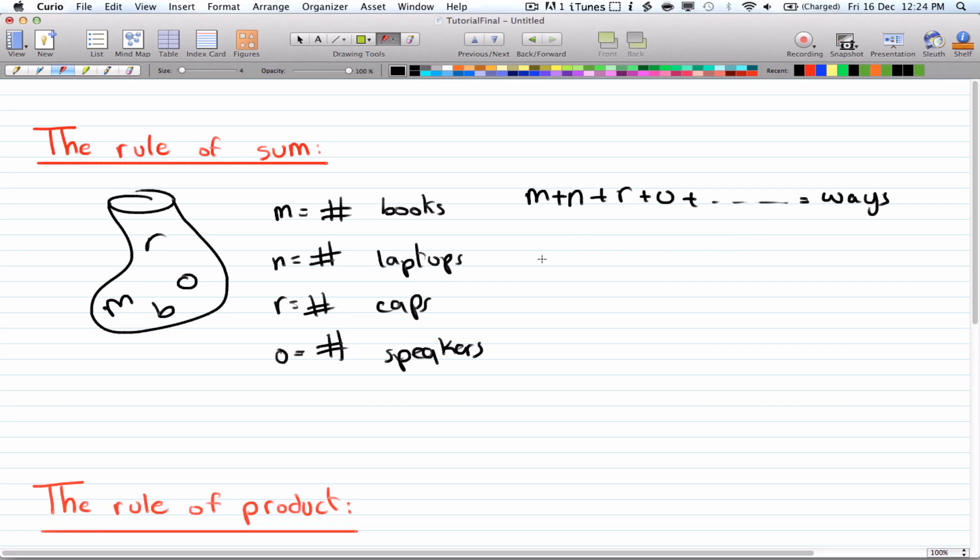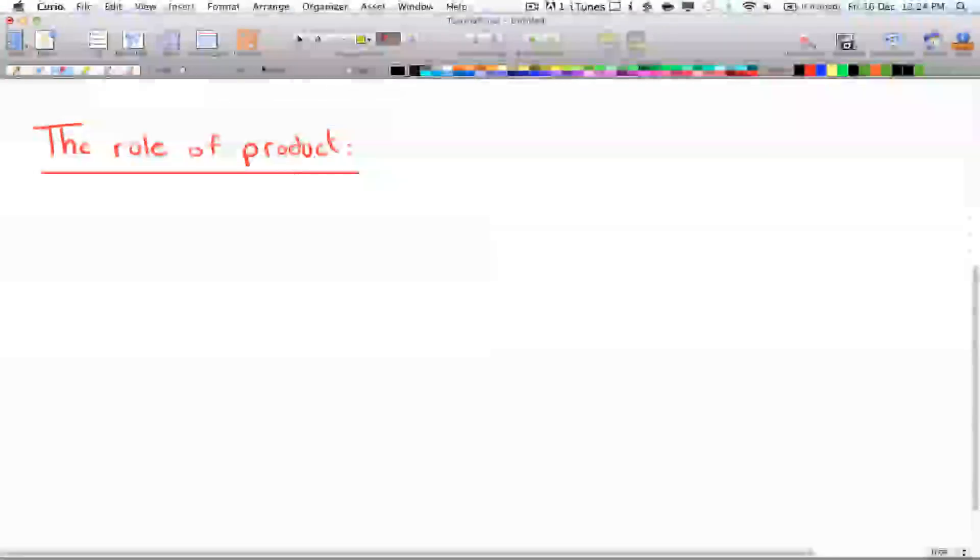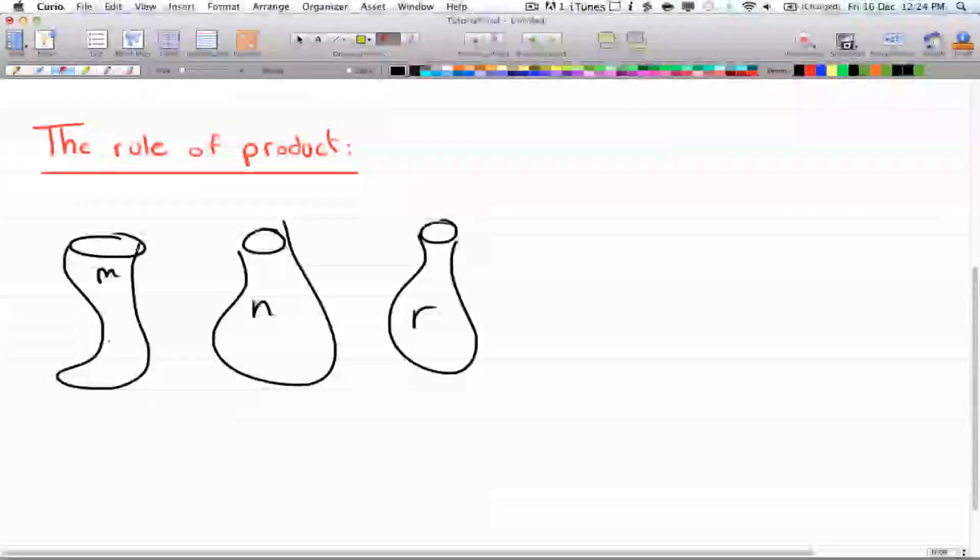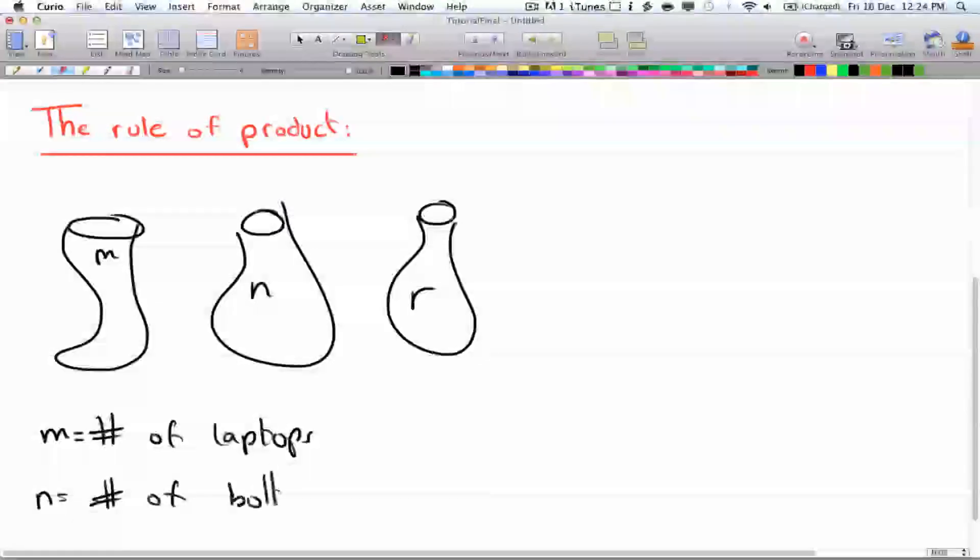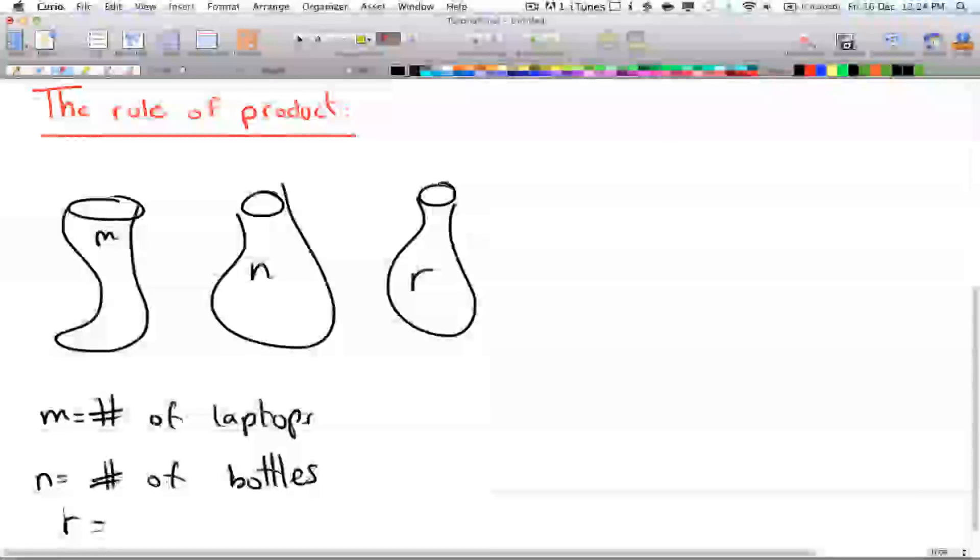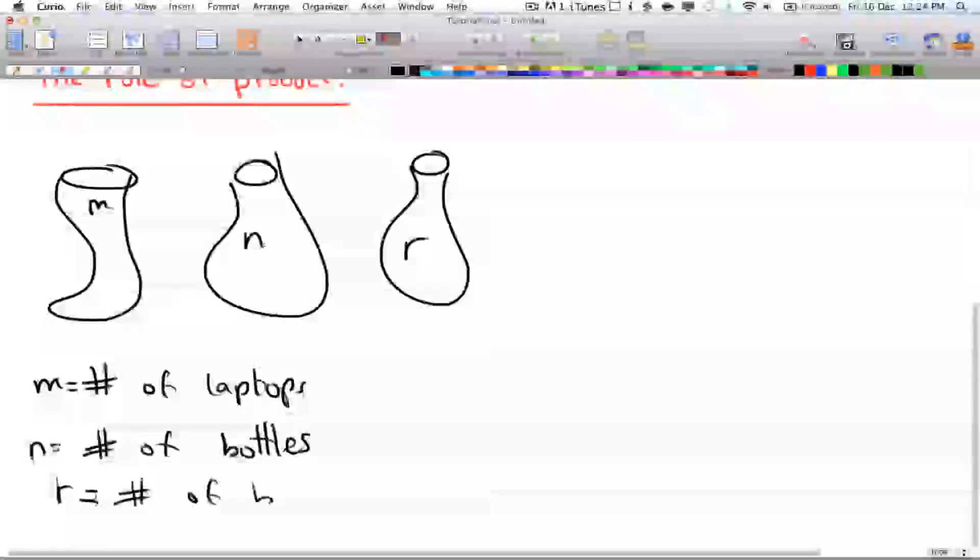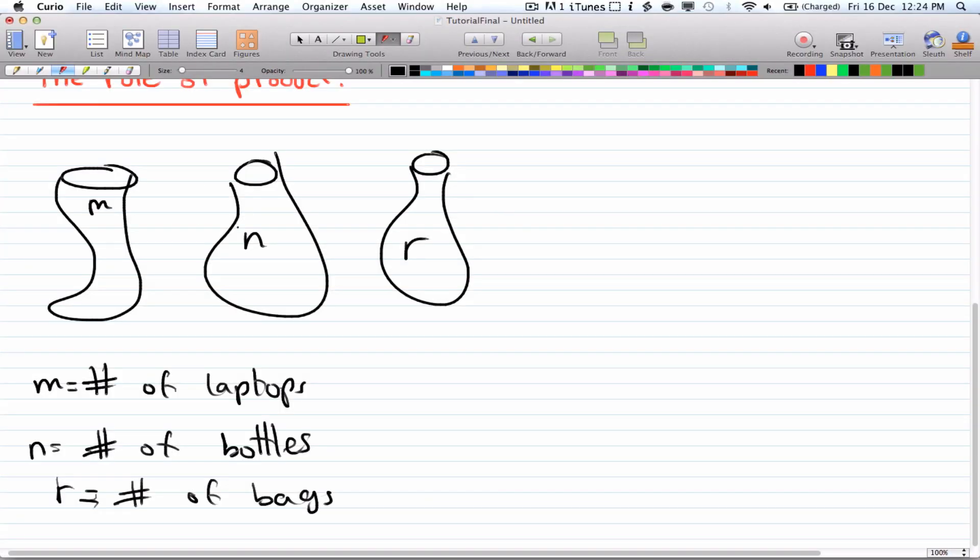Now the rule of product is a bit different. In this case each one is in a bag, so if you have a bag of m, a bag of n, and a bag of r. Let's say m equals the number of laptops, n is the number of bottles, and r equals the number of bags.